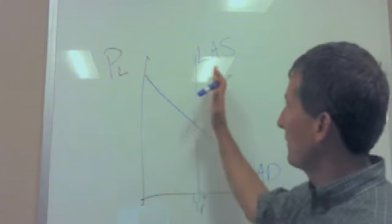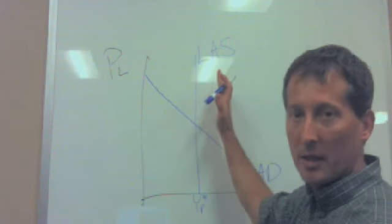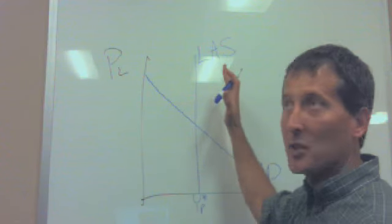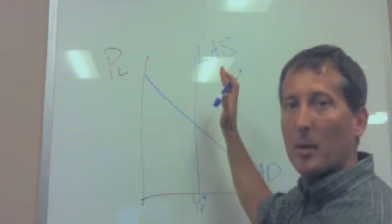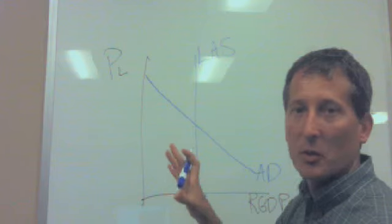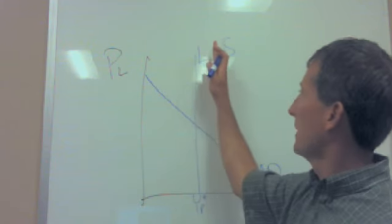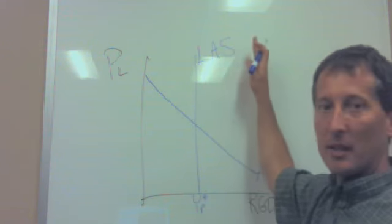So some of the things that will shift the long run aggregate supply, the nation's prosperity if you will, is changes in land, labor, capital, entrepreneurship, those basic resources. As those increase, then the economy's potential increases.